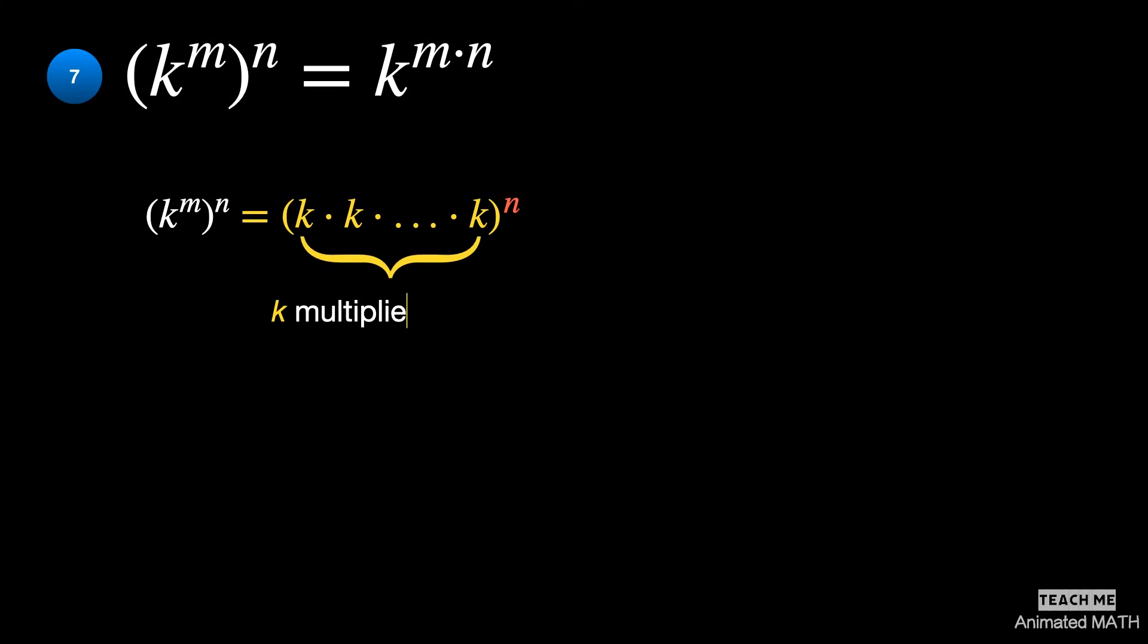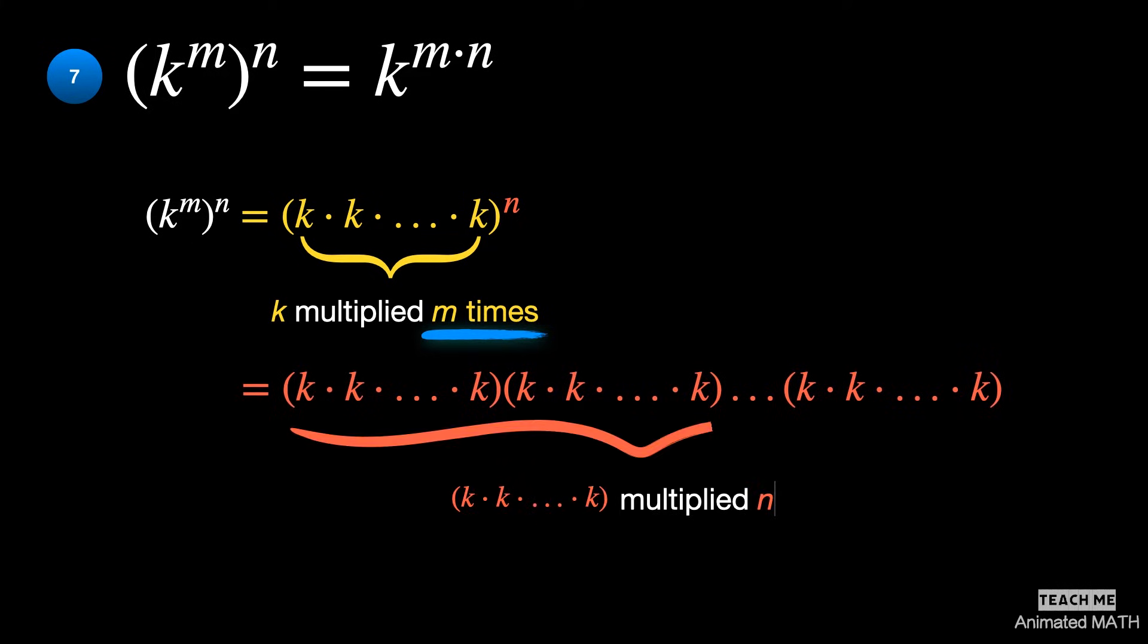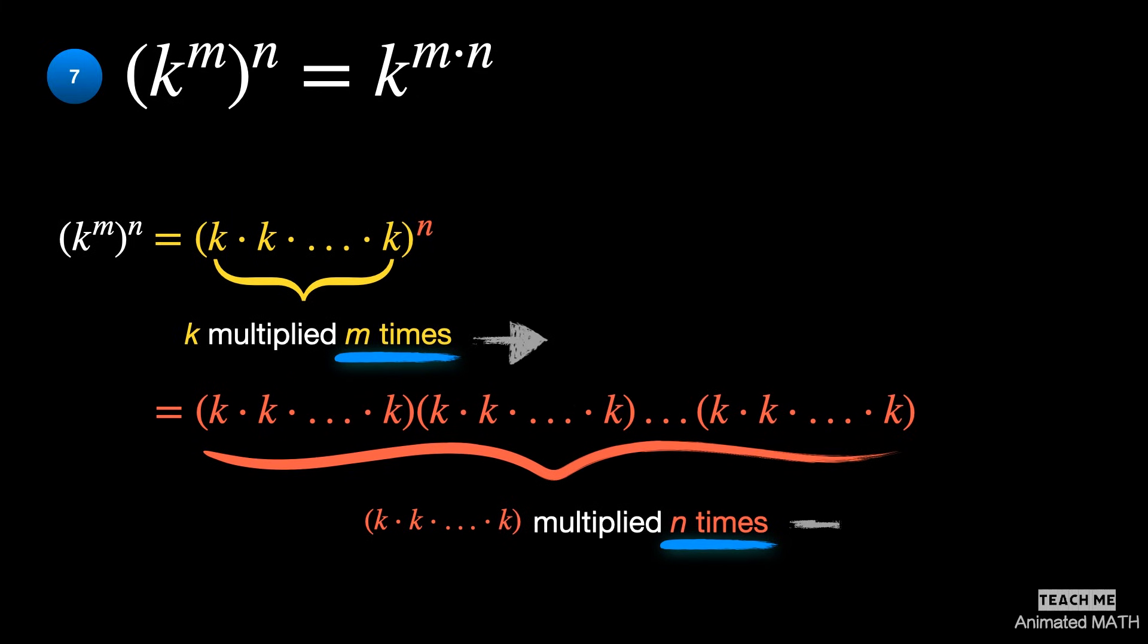Then you have to multiply the resulting number by n times. This will give you a grand total of m times n times.